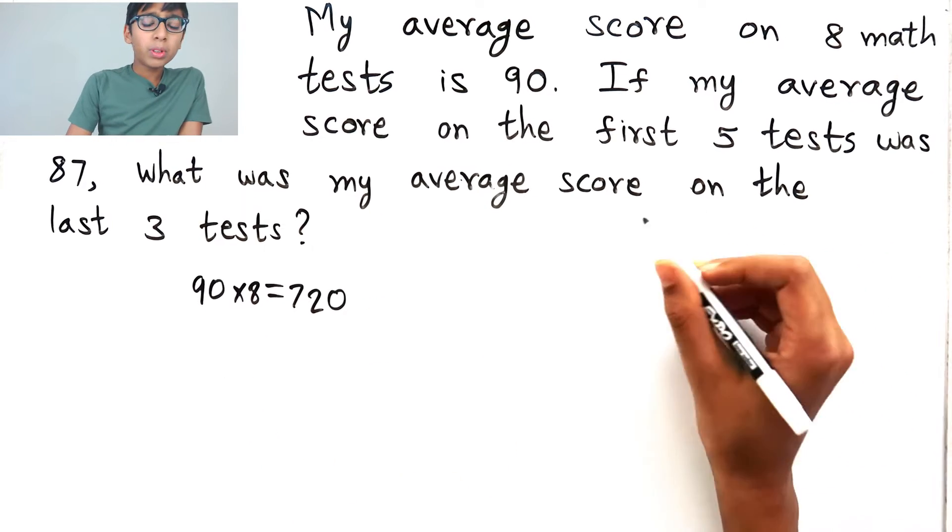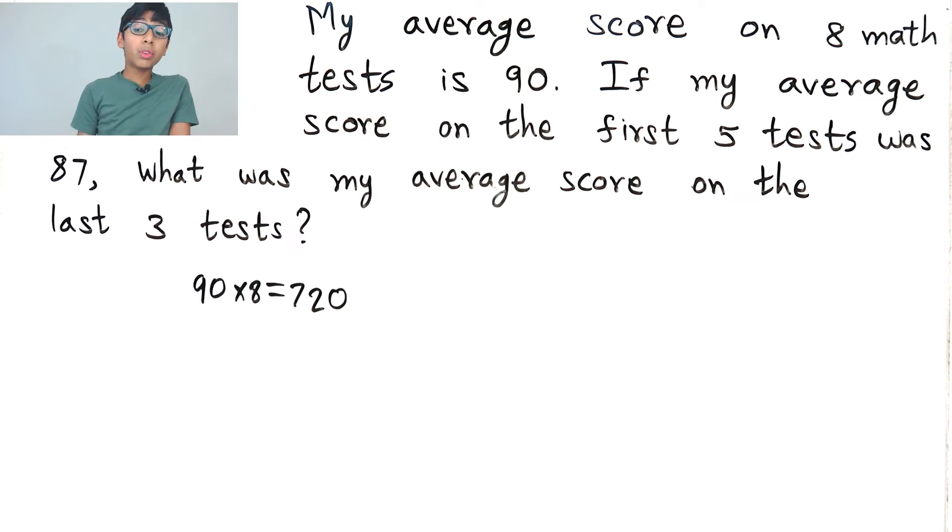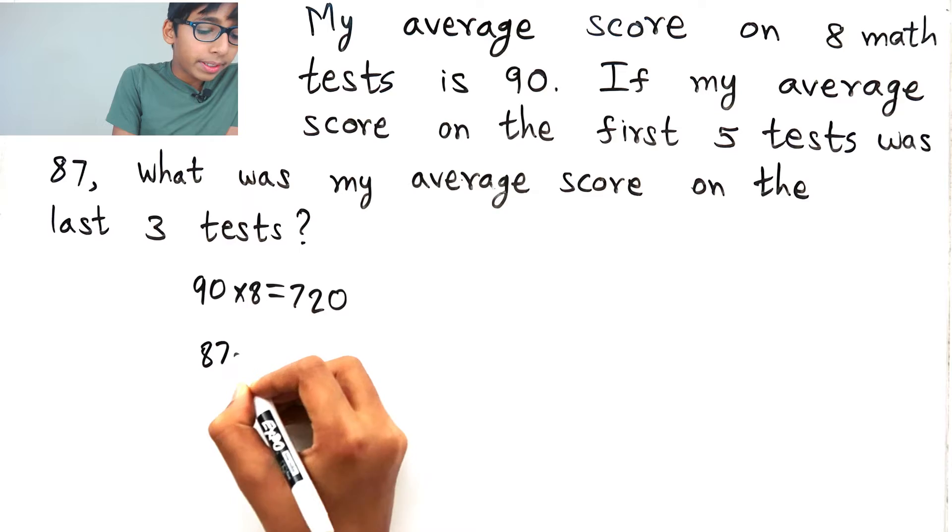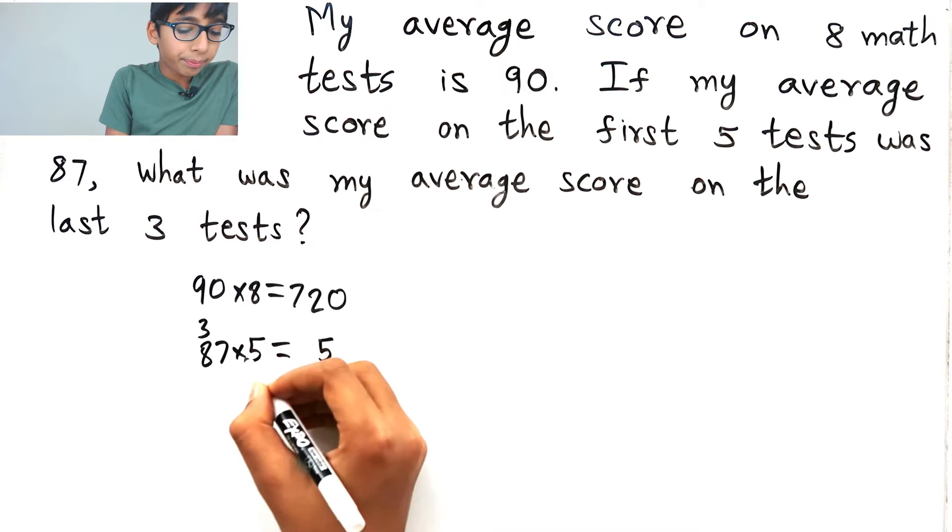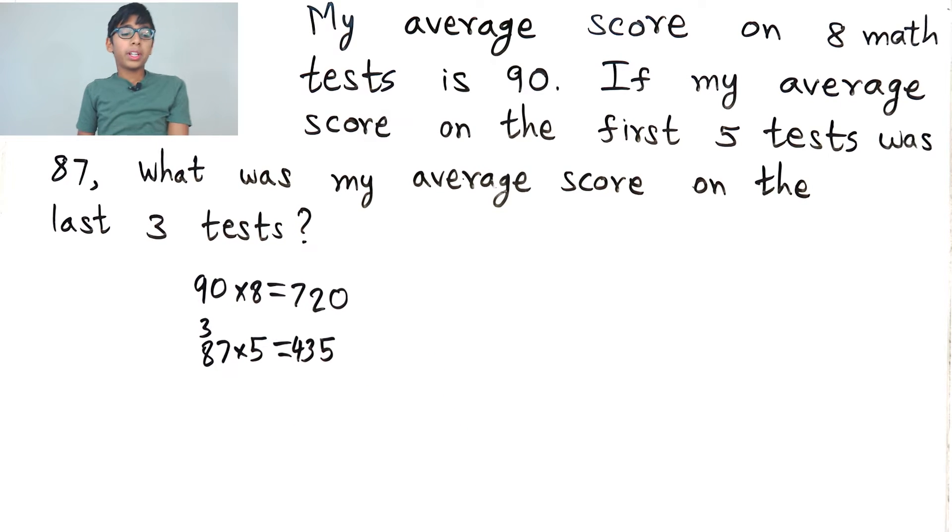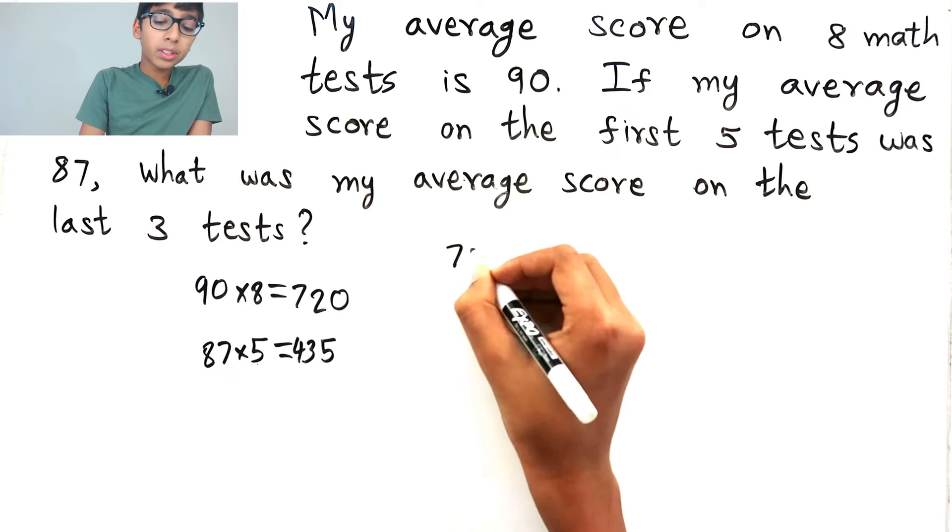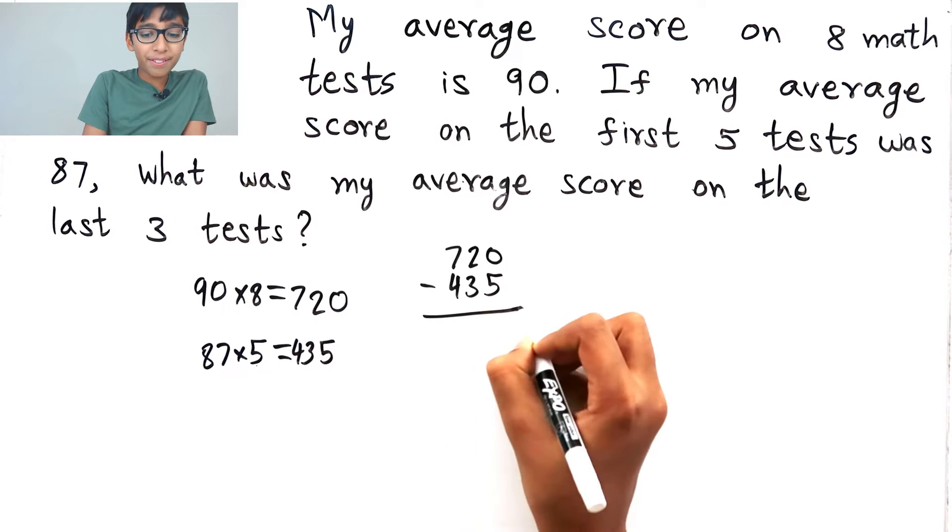So, if my average score on the first 5 tests was 87, my average score on the first 5 tests was 87. So, I have to do 87 times 5 to find how much points I get. So, 87 times 5 would equal 435.